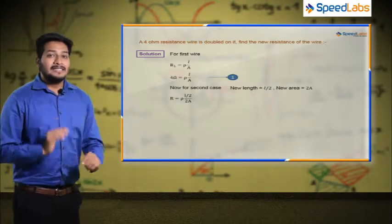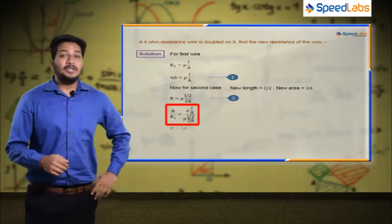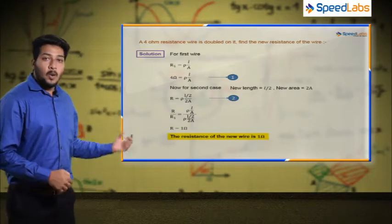So if you take the ratio of the first equation and the second equation, the new resistance comes out to be 1 ohm.